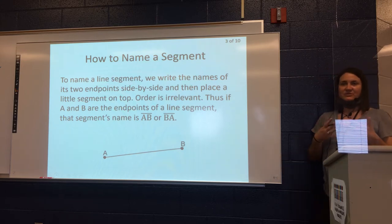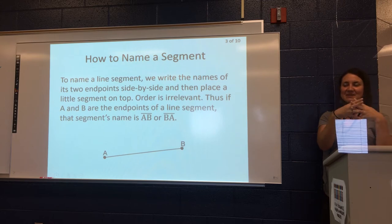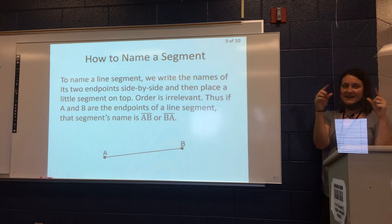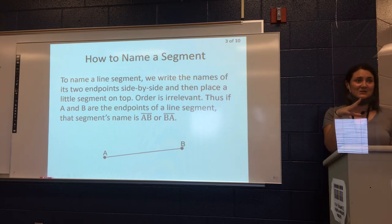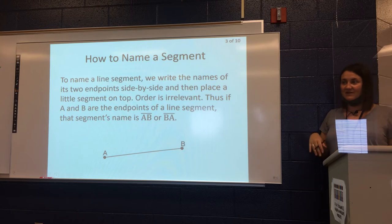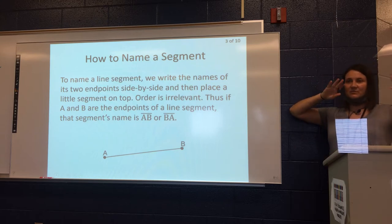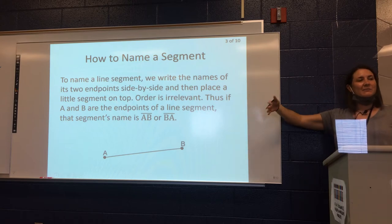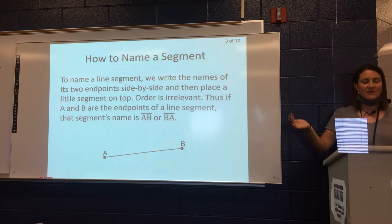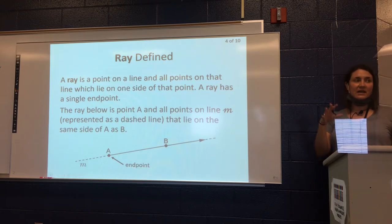One of the good things about geometry is that most of our symbols are just miniature versions of what we're naming. The segment symbol is a little segment above it, the line symbol is a line above it, and we'll get to the ray in a minute. Angles, triangles, circles — lots of things follow this pattern. Also, a big advantage of segments over lines is that since segments don't go on forever, we can actually talk about and measure their length.